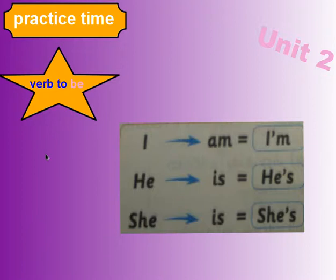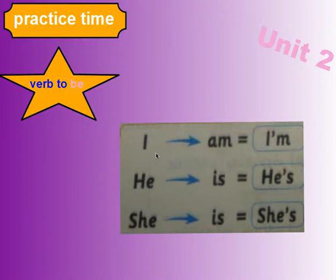Let's make a quick review of verb to be, with subject pronouns I, he, and she. The personal or subject pronoun I uses am — I am, abbreviation I'm. He is, abbreviation he's.